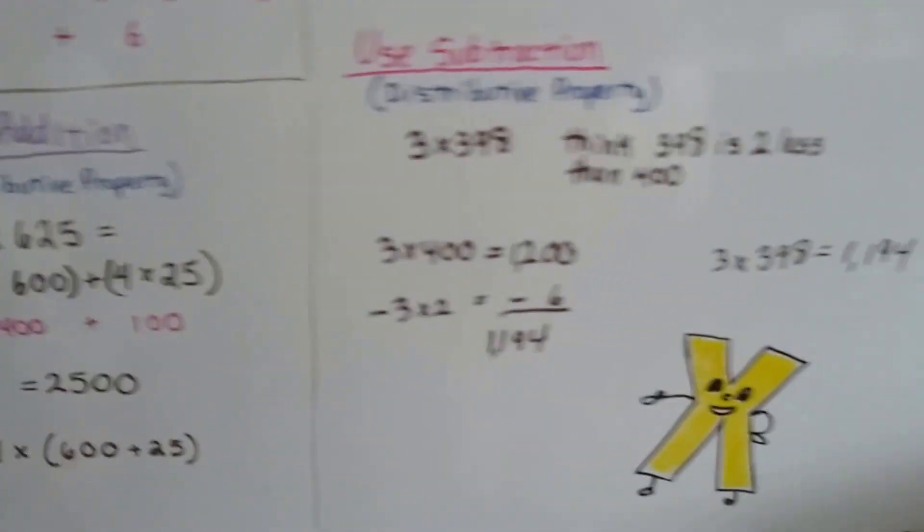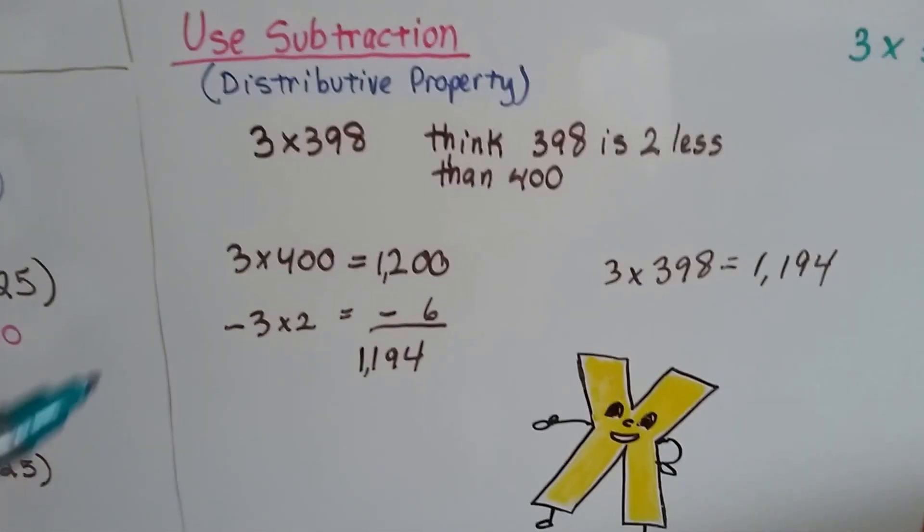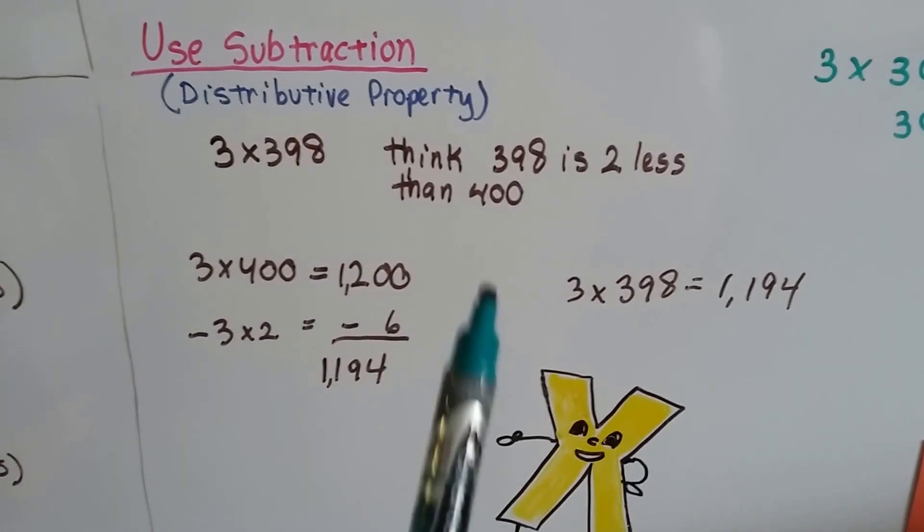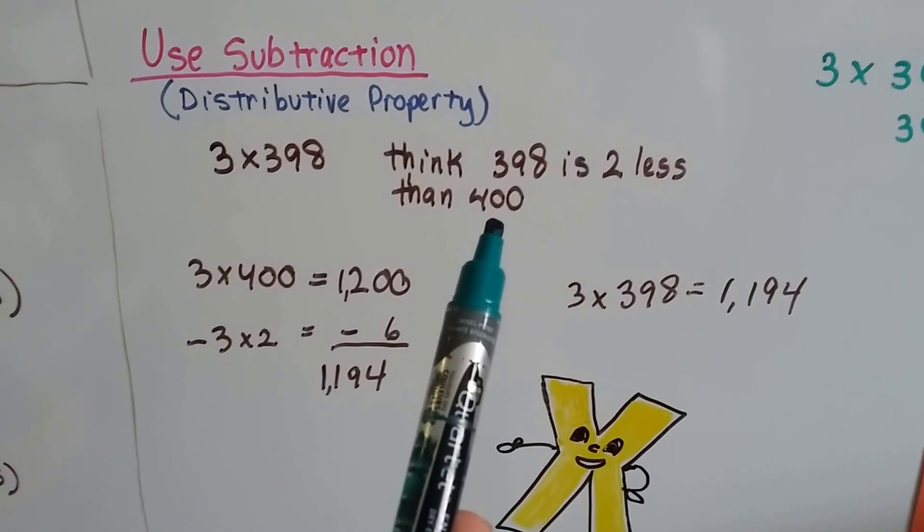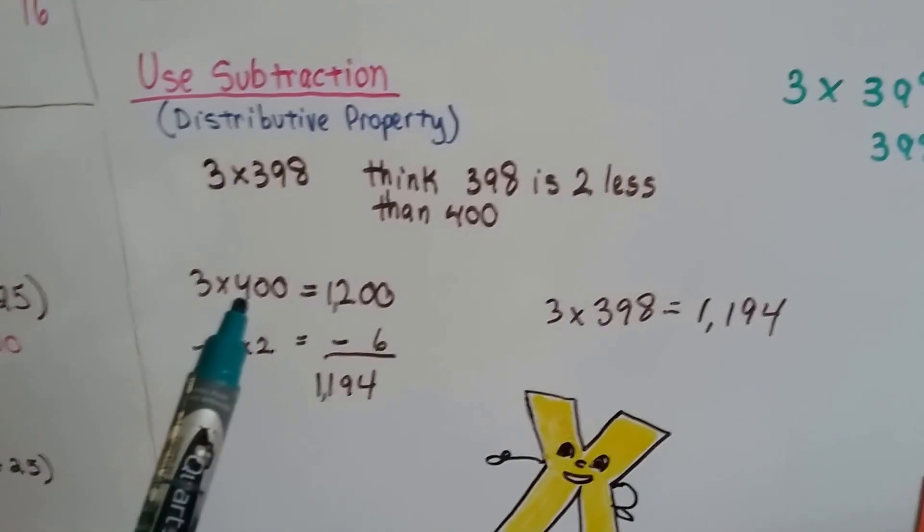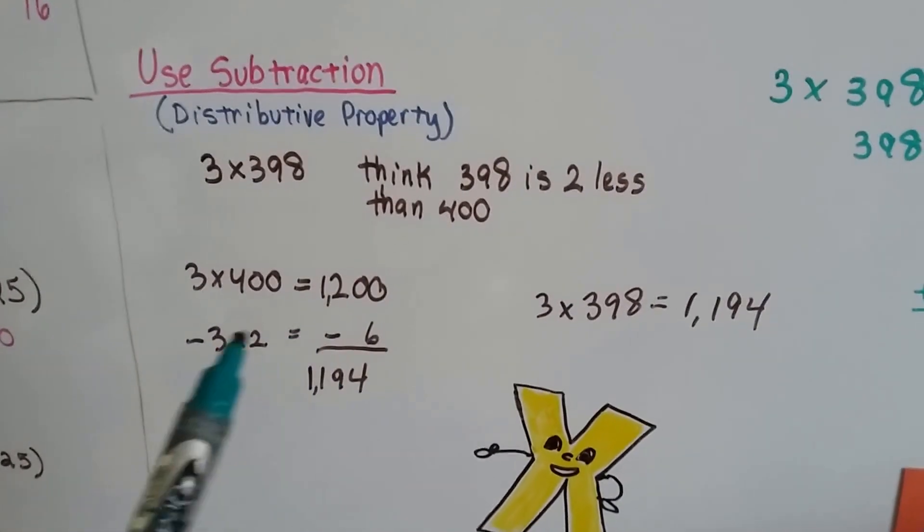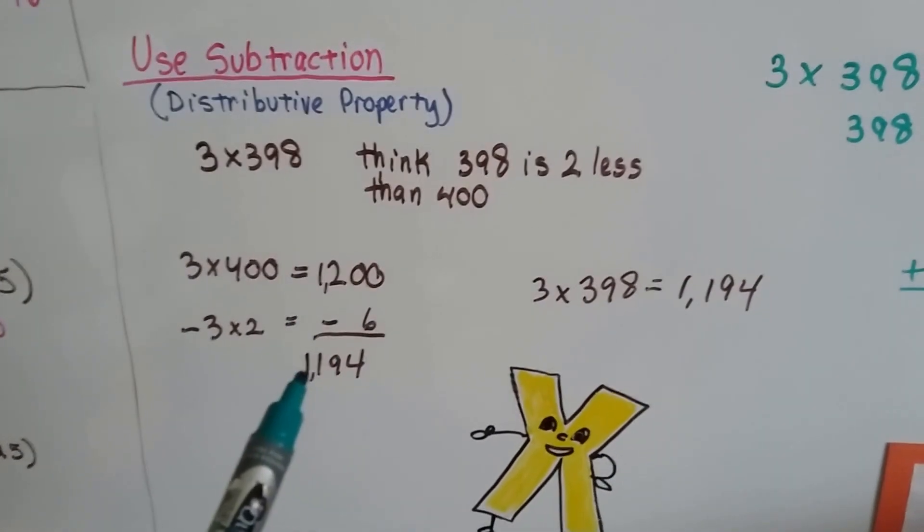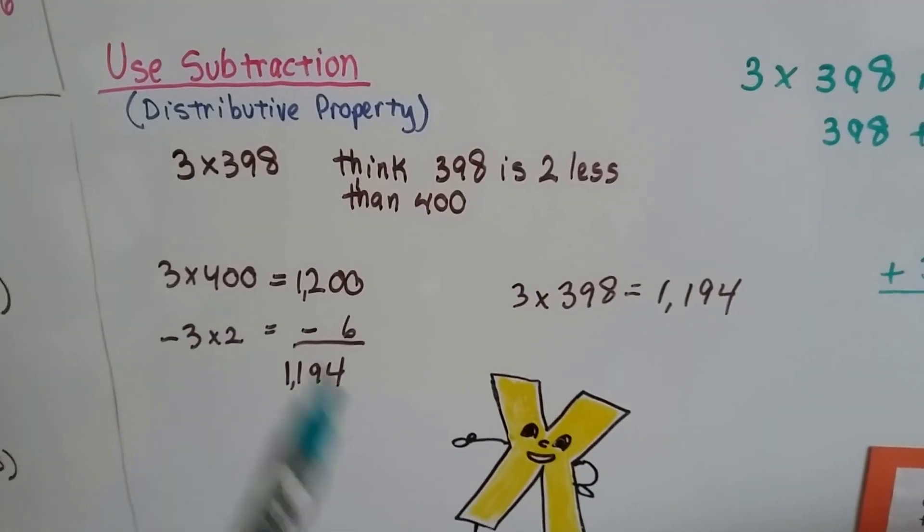We can also do this with subtraction using the distributive property. If you've got a problem like 3 times 398, we think of 398 as 2 less than 400. So we do 3 times 400, which is 1200, then take away 3 times 2. We take away 6. That's 1194. We can do that in our head.